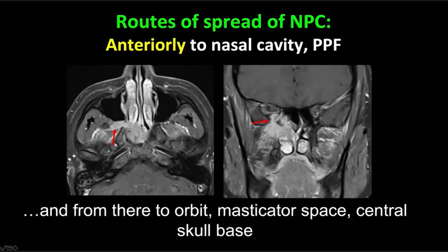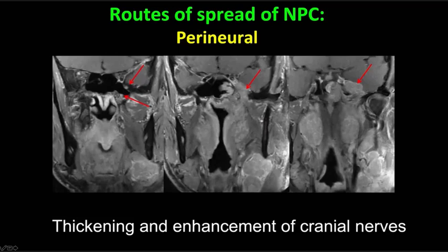Tumor can also spread anteriorly into the nasal cavity, and from there laterally through the sphenopalatine foramen to the pterygopalatine fossa, and through there to the pterygomaxillary fissure. The pterygopalatine fossa provides access to important structures cranially through the inferior orbital fissure toward the orbit, but also through the vidian canal and foramen rotundum back to the skull base. And of course, perineural tumor spread — since all these cranial nerves come out through the skull base, there is the opportunity for tumors to access these cranial nerves. We can see here the asymmetric thickening and enhancement within the vidian canal and in foramen rotundum indicating perineural spread, as well as perineural spread through foramen ovale up into the intracranial compartment, with Meckel's cave filled with tumor from perineural spread of nasopharyngeal carcinoma.